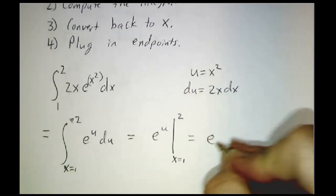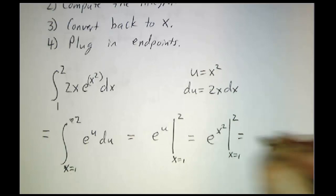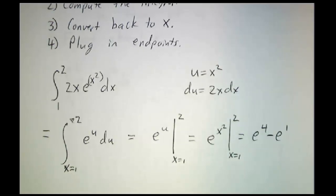And then we say this is e to the u evaluated at x equals 1 and x equals 2. And so that's e to the 4th minus e to the 1st power. And we're done.